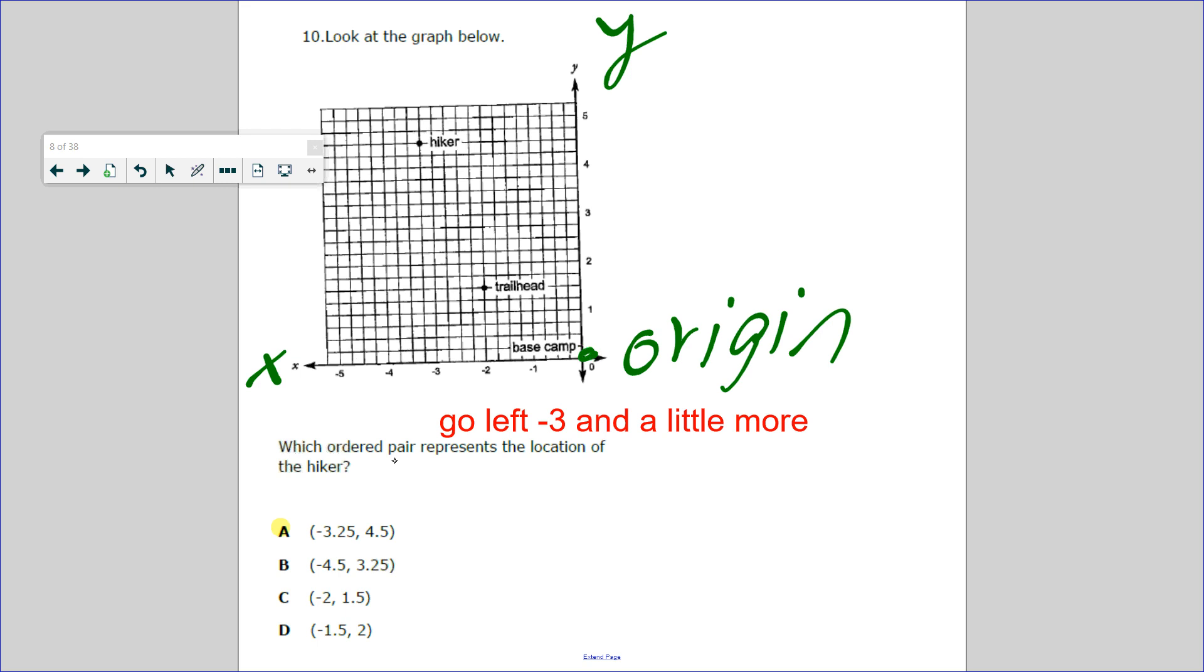When you graph points, you always start with the x-axis, then you do the y-axis. Which ordered pair represents the location of the hiker? So let's see: I have to go negative 1, negative 2, negative 3.